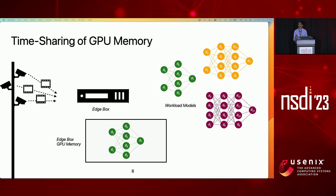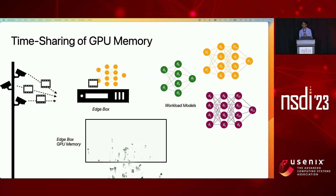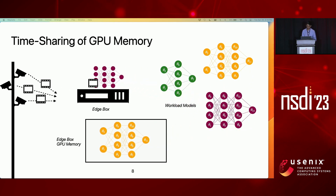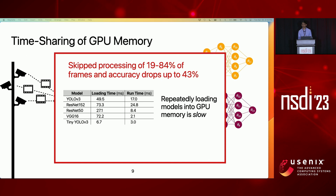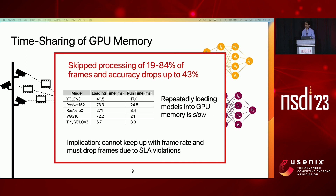One way to deal with insufficient GPU memory at the edge is to timeshare model execution into the GPU by swapping the model in and out of GPU memory. Using any off-the-shelf swapping scheduler, when there's not enough GPU memory to concurrently house multiple models, the models are continually swapped in and out. However, when applied to our workloads, we find that these techniques result in skipped processing of 19 to 84% of frames and corresponding accuracy drops of up to 43%. The reason is that the costs of repeatedly loading models into GPU are prohibitive and often exceed the corresponding inference times by as much as 30x, causing systems to drop frames due to SLA violations.